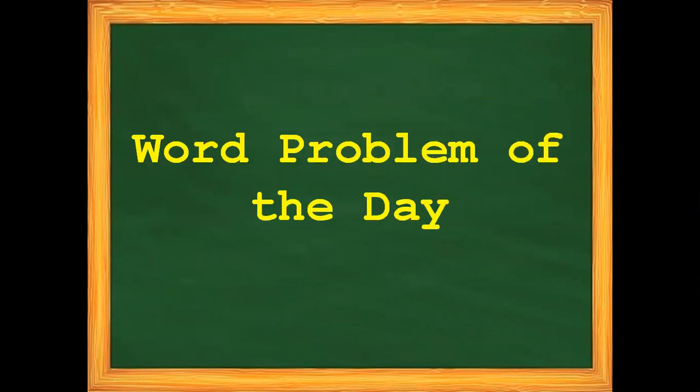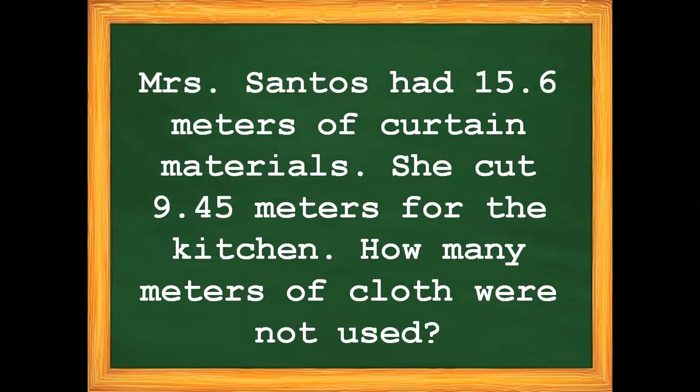For our word problem of the day: Mrs. Santos had 15 and 6 tenths meters of curtain materials. She cut 9 and 45 hundredths meters for the kitchen. How many meters of cloth were not used?